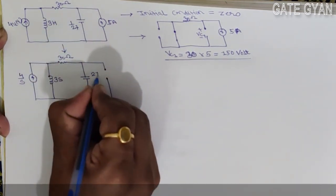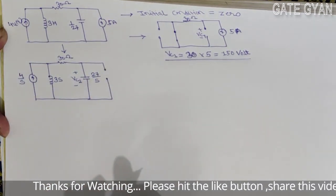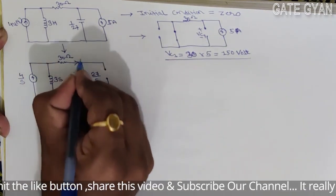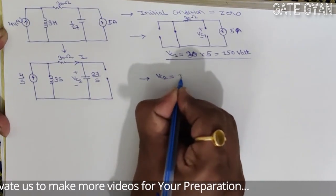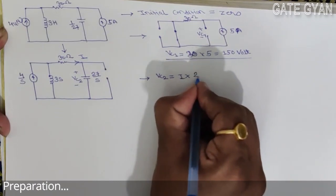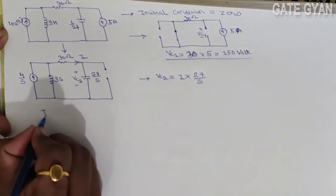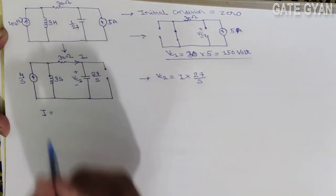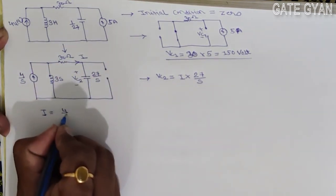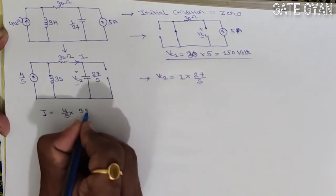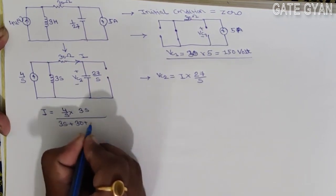The capacitor becomes 27/s in the s-domain. I have to find VC2. VC2 equals i times 1/sC, which is 27/s. Now I have to find the current i using the current divider rule. Using current divider: i equals (4/s) times 3s, divided by (3s + 30 + 27/s).